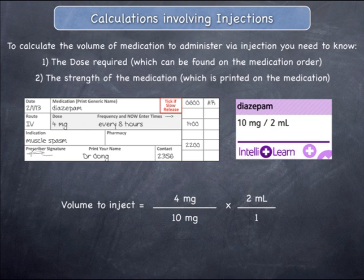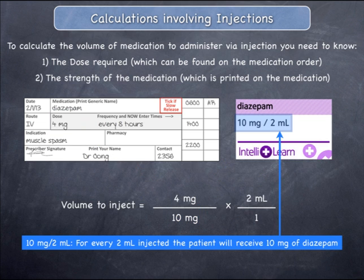The required calculation is shown. The strength or concentration of the medication specifies how much active medication — in this case diazepam — is contained in a given volume of solution. 10 milligrams per two mils means that every two mils of solution contains exactly 10 milligrams of diazepam.